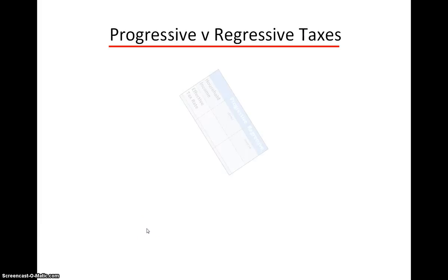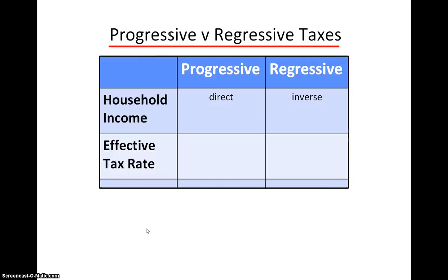In a progressive tax, income and the effective tax rate are directly related. In other words, people with relatively high incomes pay a larger percentage of their incomes in taxes than people with relatively low incomes. As income increases, the effective tax rate increases. By the same token, as household income decreases, the effective tax rate decreases.